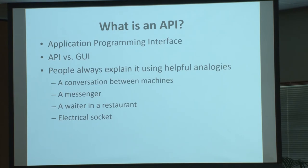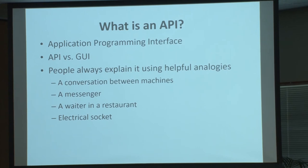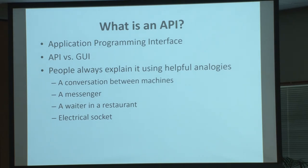The other thing that helped me understand APIs was analogies. The most common one is that an API is a conversation between machines. One video I watched suggested thinking about APIs as a messenger that takes requests: 'Think of an API as a waiter in a restaurant. Imagine you're sitting at the table with a menu of choices to order from, and the kitchen is the part of the system which will prepare your order. What's missing is the critical link to communicate your order to the kitchen and deliver your food back to the table — that's where the waiter, or the API, comes in.' I quite liked that because it helped me understand the purpose of an API: to communicate between separate parts of a system.